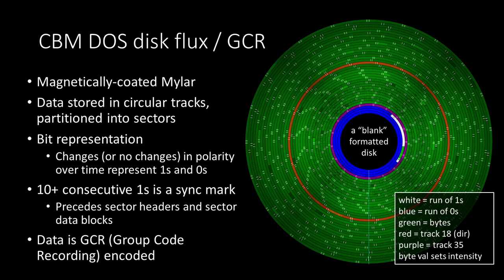That is a visualization of a floppy disk. A floppy disk has a disk inside of magnetically coated mylar that spins, storing data in circular tracks partitioned into sectors. The bit representation is just changes in polarity over time. If you have 10 or more consecutive ones in a row, that is a sync mark — a special signal to the drive saying a sector header or data block is coming up. The data is GCR encoded, which I'll talk about in just a little bit.